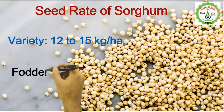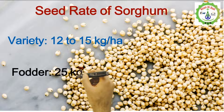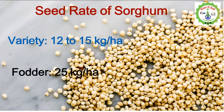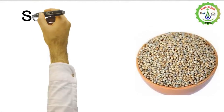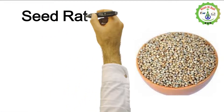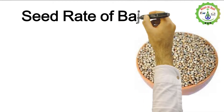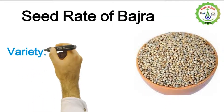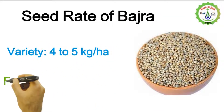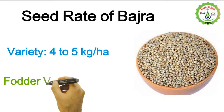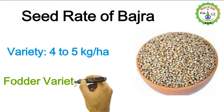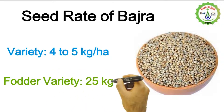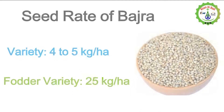Seed rate of sorghum: variety seed — 12 to 15 kilograms per hectare; fodder sorghum — 25 kilograms per hectare. Seed rate of bajra: variety seed requires 4 to 5 kilograms per hectare; fodder bajra requires 25 kilograms per hectare.